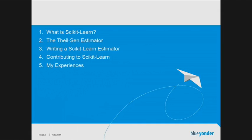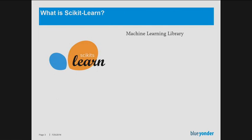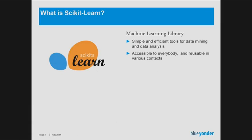So first of all, what is scikit-learn? Scikit-learn is a machine learning library — whenever you have some kind of data and you want to extract insight from it, you can use scikit-learn. It's a simple, efficient tool for data mining and data analytics, accessible for everyone and applicable to all kinds of problems. It's built on NumPy, SciPy, and Matplotlib. And it's open source under BSD license, so it's also commercially usable.